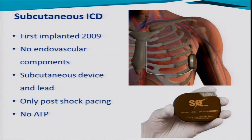Many problems with ICDs arise from leads within the vascular system, and with this in mind a new entirely subcutaneous device was developed in 2009. The device sits on the left lateral chest wall and the lead doesn't go into the veins at all — it's entirely subcutaneous and picks up a surface ECG. This is much better for the paediatric population who are growing and will outgrow their leads and device over time. The only thing to bear in mind is that it cannot pace the heart — it will only deliver percutaneous post-shock pacing, so you cannot use ATP in these devices.